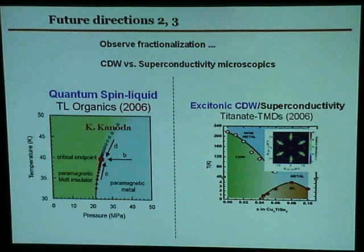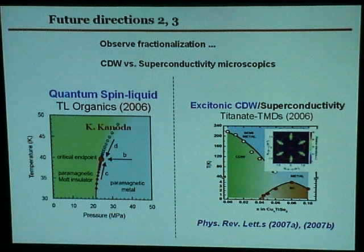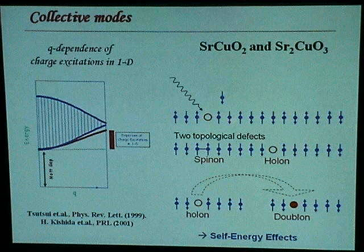To look for fractionalization, just look at the spectral function — whether it has two branches. If I take out an electron, I create two topological defects. I want to look at spinon and holon.